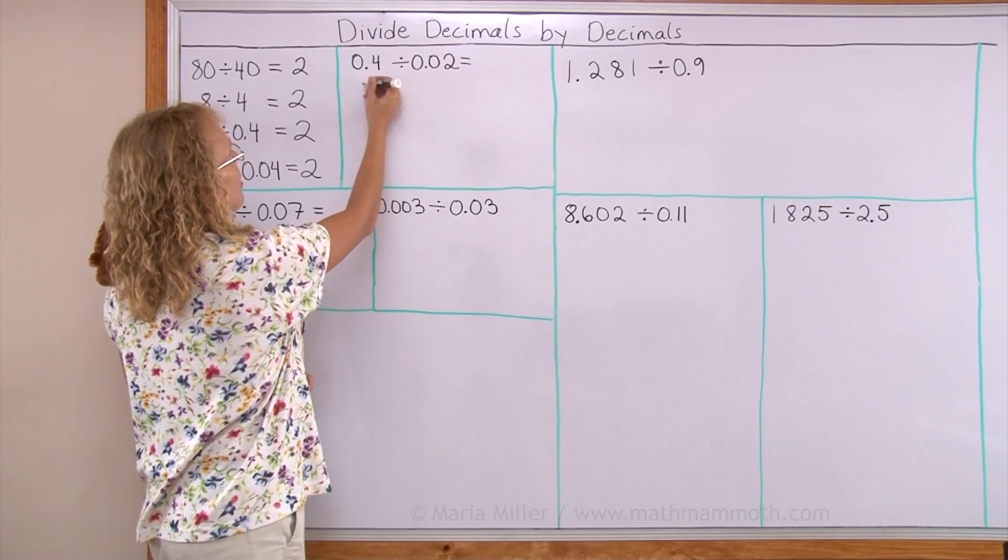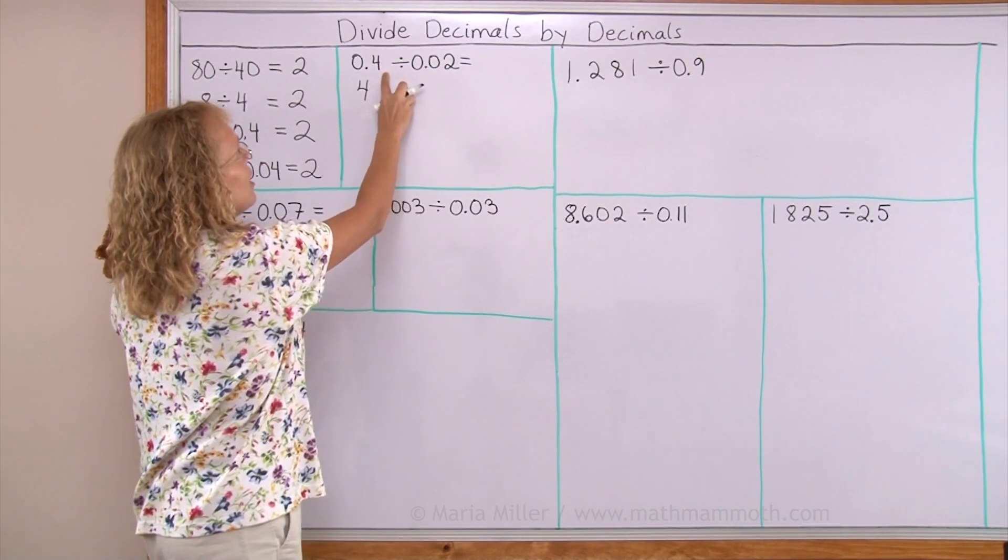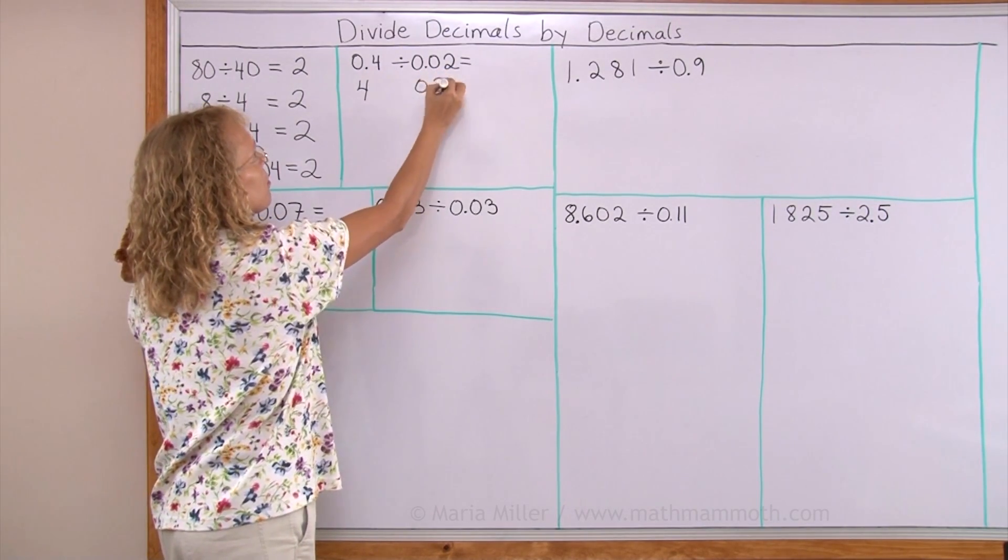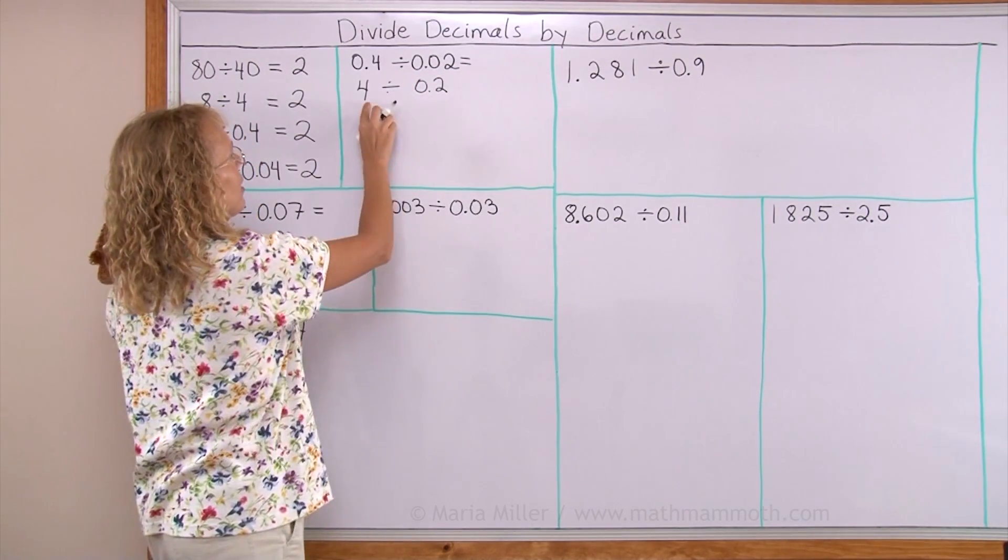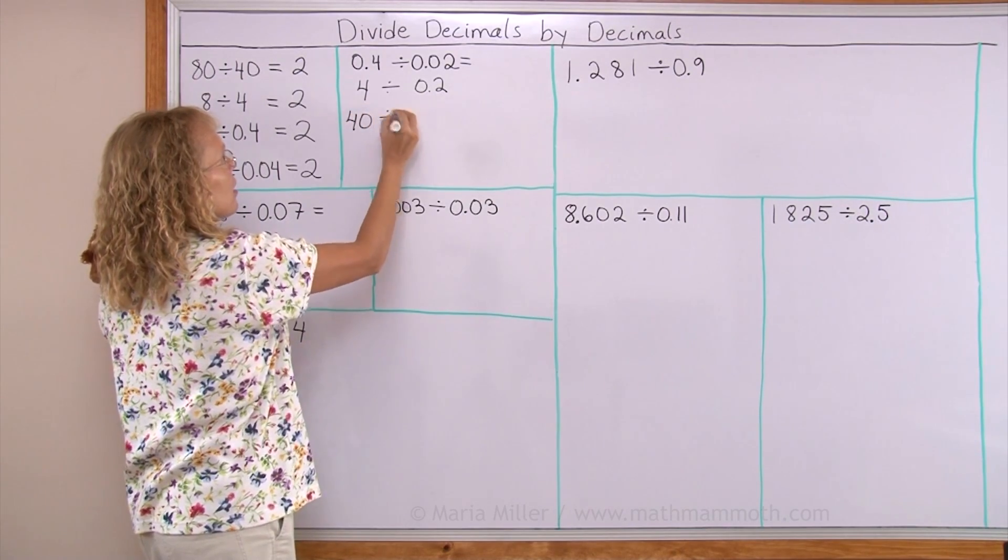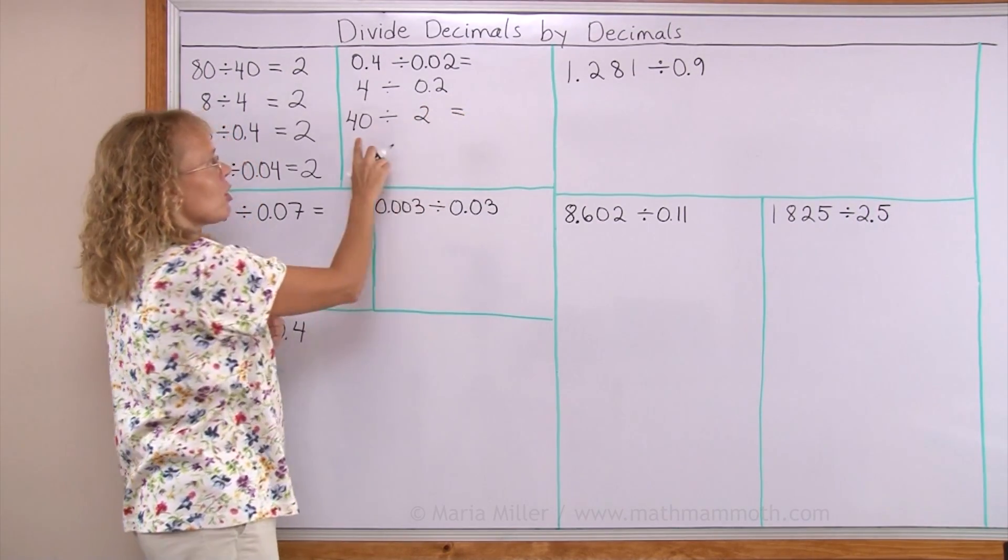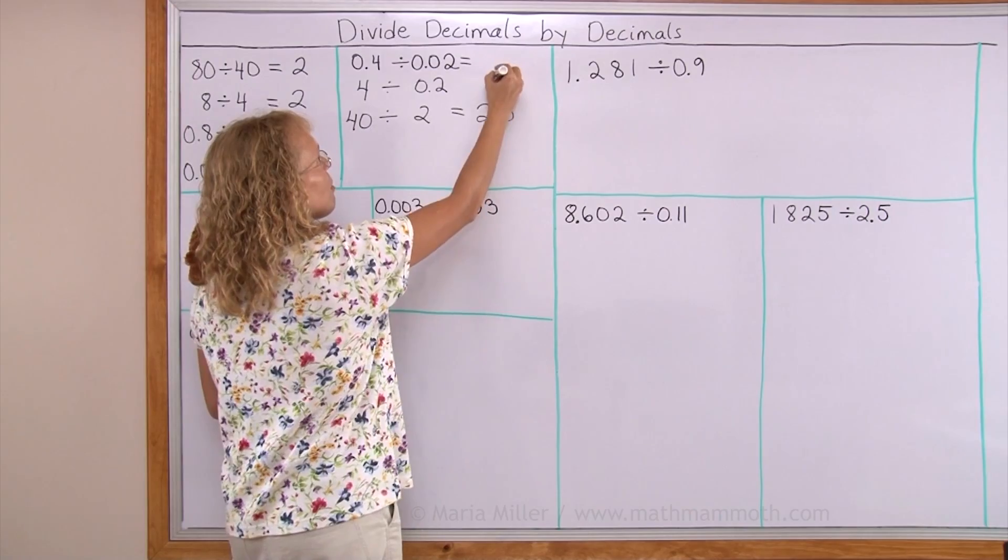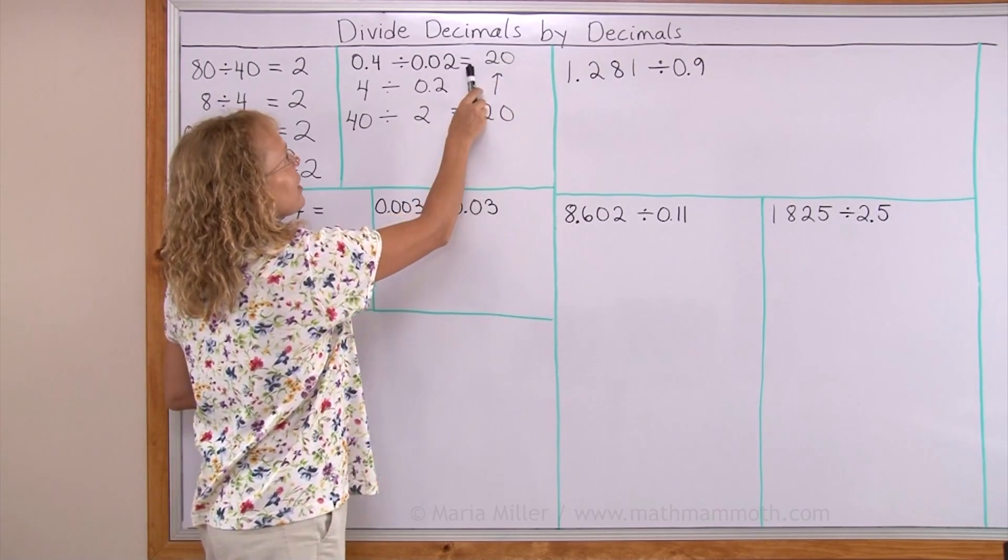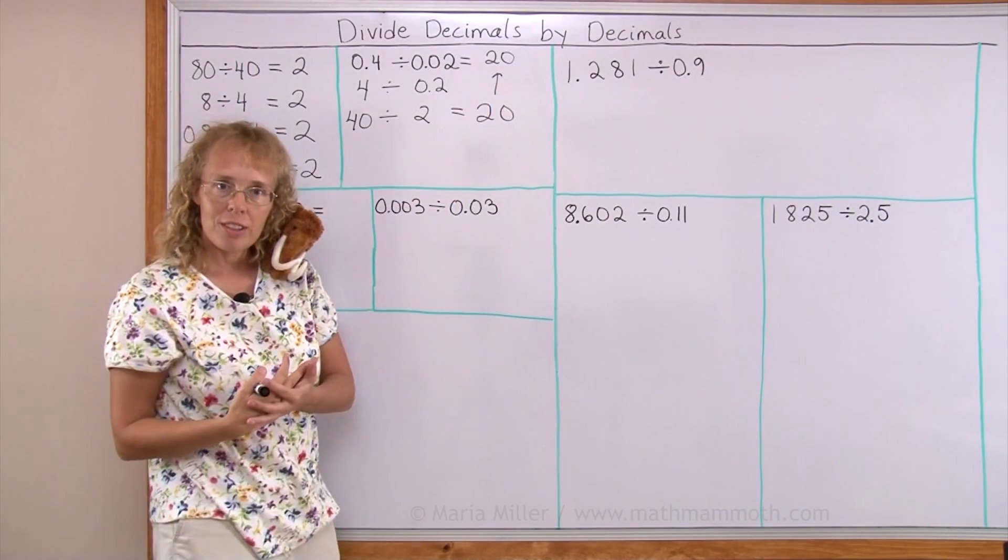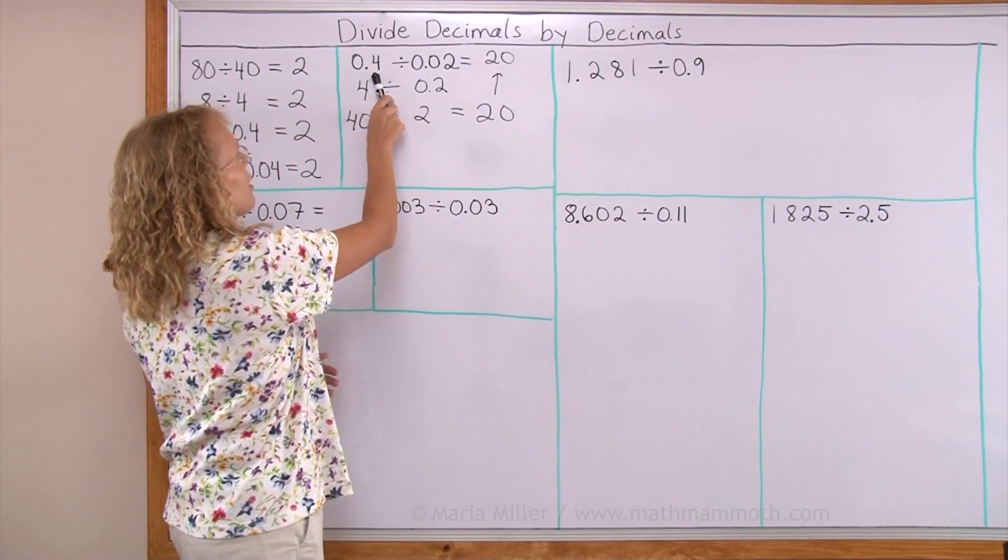So, I can do the same here. This times 10 will be 0.4. It's like moving the decimal point one step over here. This times 10 will be 0.2. Now I do the same one more time. 4 times 10. And then this times 10, I move the decimal point here, I get 2. Now I can solve this one. It is 20. And then I copy my answer to the original problem, 20. You can even check it by multiplying. 20 times 0.02 would be 0.40. And 0.40 simplifies to 0.4. So it checks.